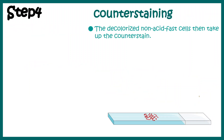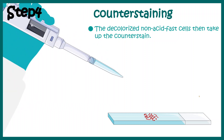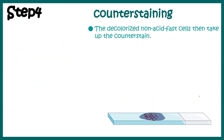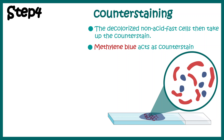In the last step, we do counter-staining with methylene blue, a blue-colored counter-stain. The bacteria which failed to retain carbol fuchsin would now take up the counter-stain methylene blue. The acid-fast bacteria have a very impermeable cell wall, so they would not allow methylene blue to stain them. Therefore, acid-fast bacteria retain their red coloration due to carbol fuchsin, and the non-acid-fast bacteria ultimately take up methylene blue and are visualized as blue cells.